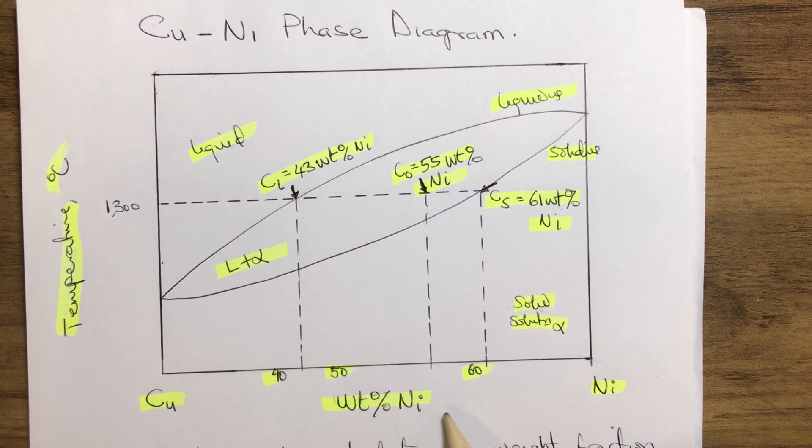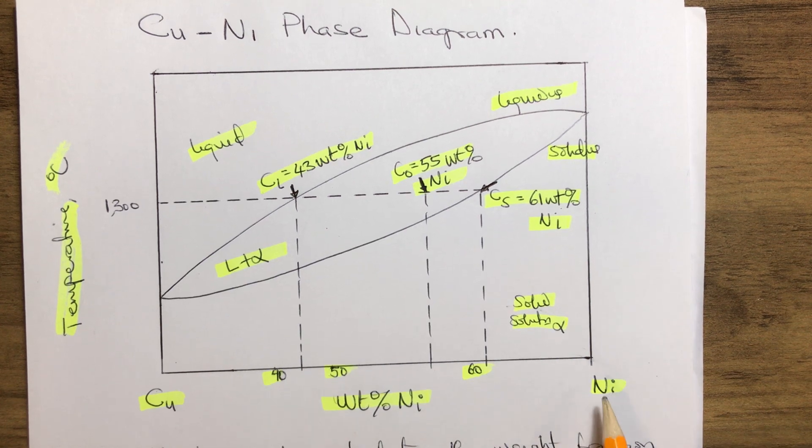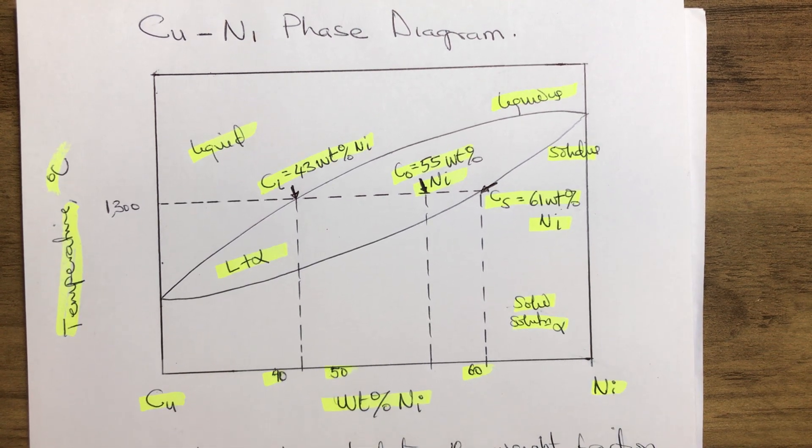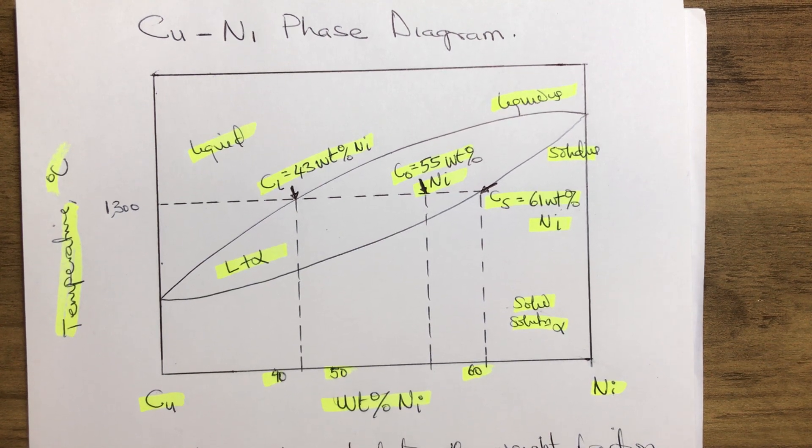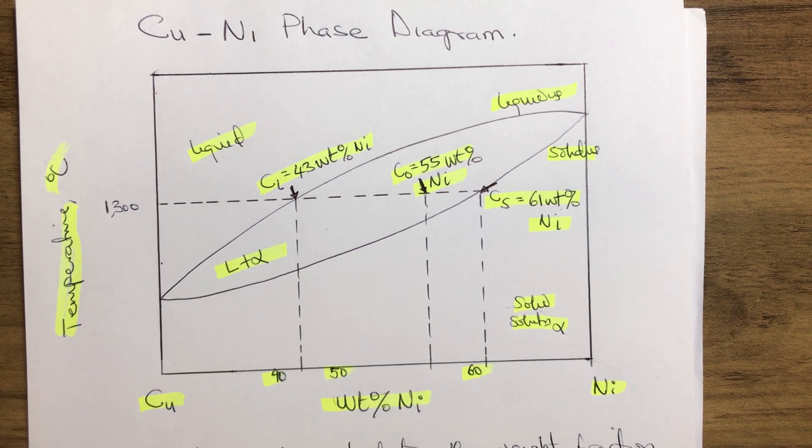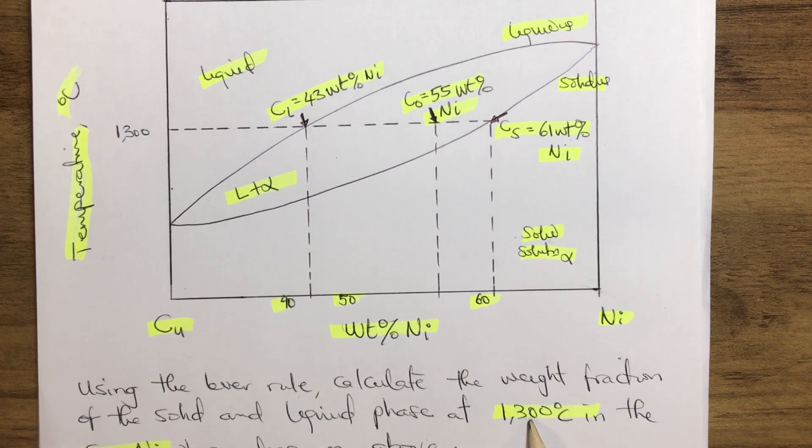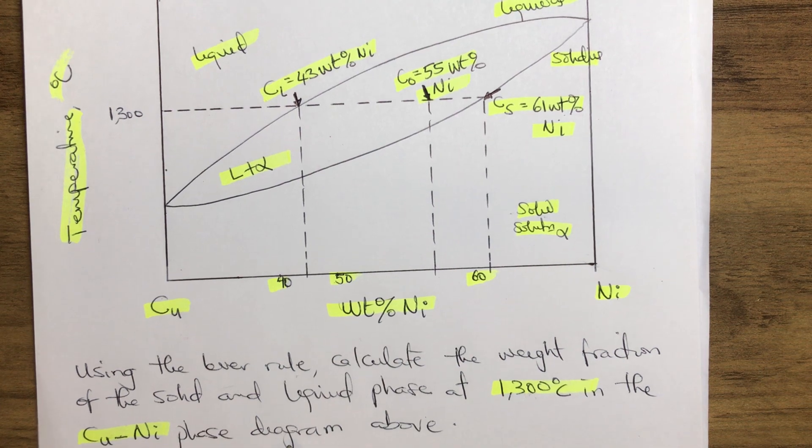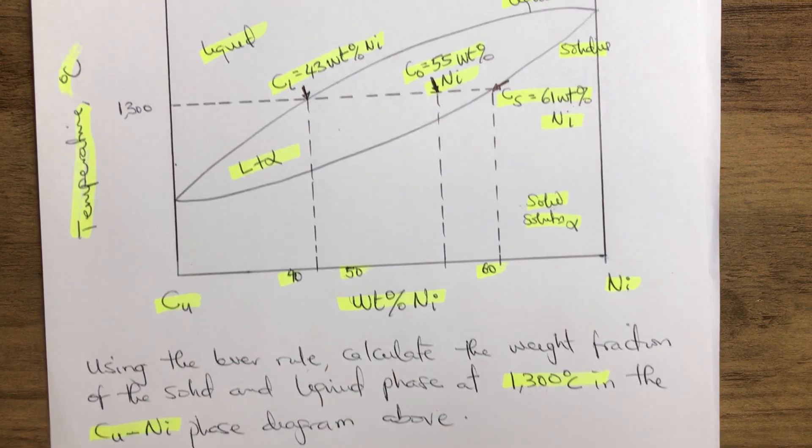The diagram shows the transition from liquid to solid. Now using the lever rule, calculate the weight fraction of the solid and liquid phase at 1300°C in the copper-nickel phase diagram above.